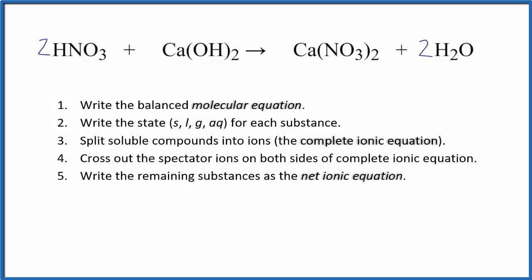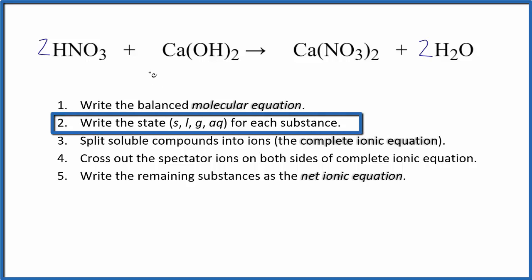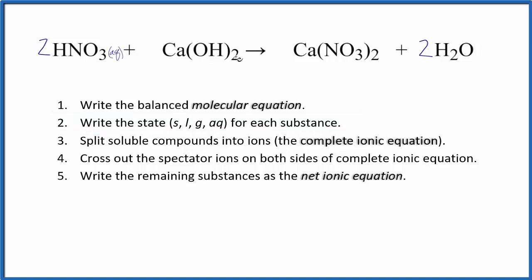Next, we should write the state for each of the substances, unless it's given. HNO3, that's probably going to be aqueous. Calcium hydroxide would be aqueous. This calcium nitrate will be aqueous, and water will be a liquid.